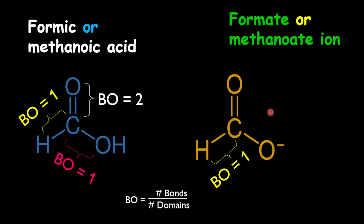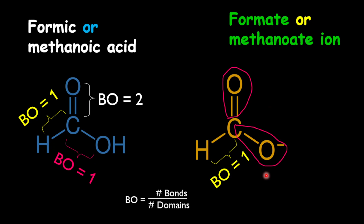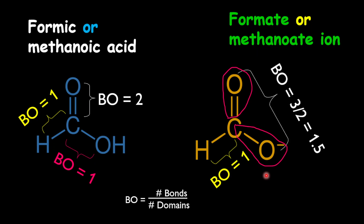Let's consider the number of bonds we have here. We have three bonds and we have two domains. So the bond order between C and O will be three divided by two, which is 1.5.